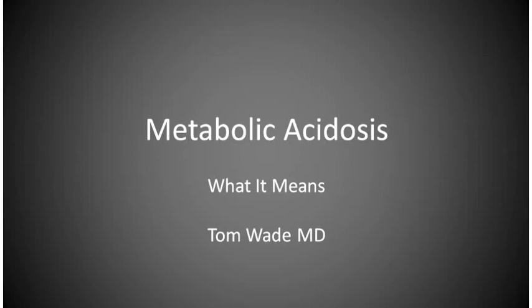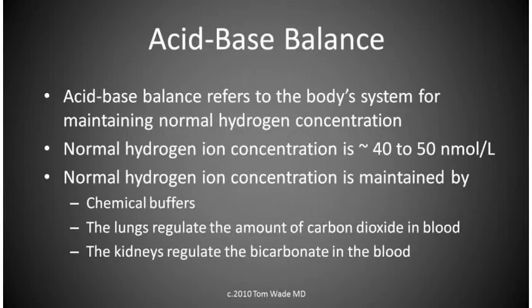In this visit, I'll discuss metabolic acidosis. Acid-base balance refers to the body's system for maintaining normal hydrogen ion concentration. Normal hydrogen ion concentration is maintained by chemical buffers in the body, by the lungs, which regulate the amount of carbon dioxide in the blood, and by the kidneys, which regulate the bicarbonate in the blood.